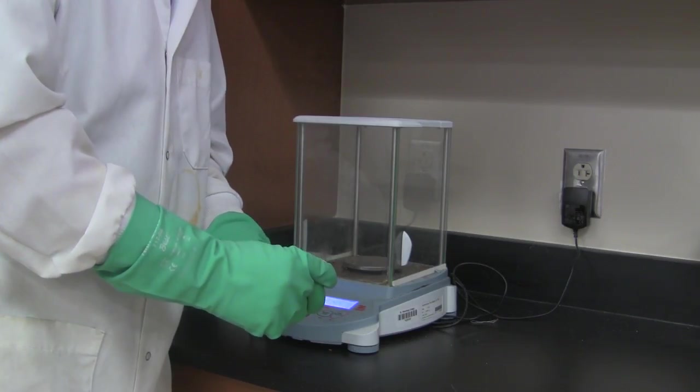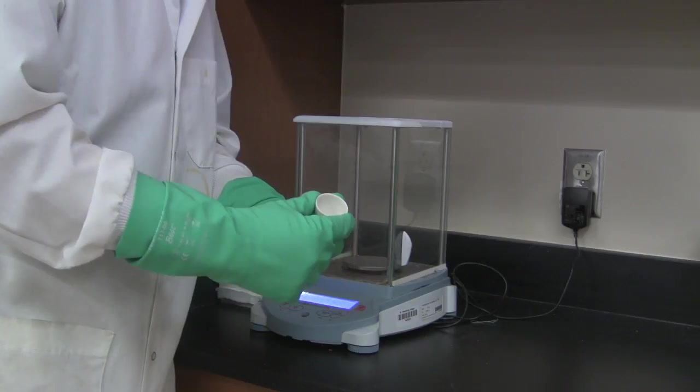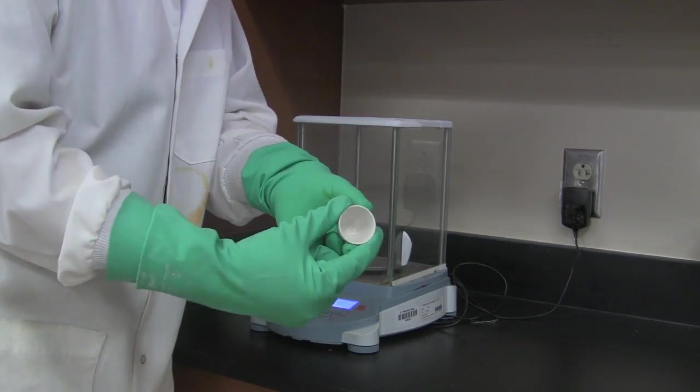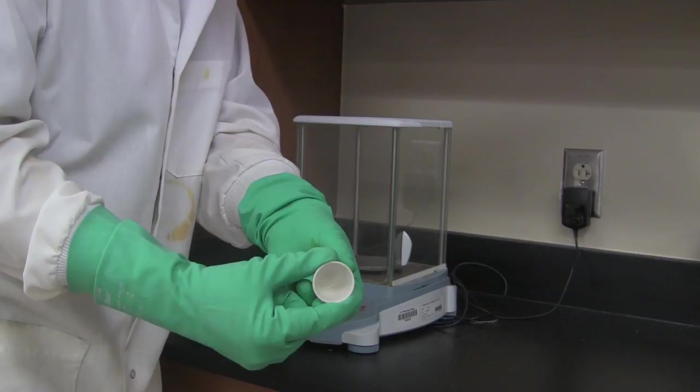This is the first part of the empirical formula lab. We're getting a crucible, and this crucible is in good shape. There's no holes or anything in the bottom of it.